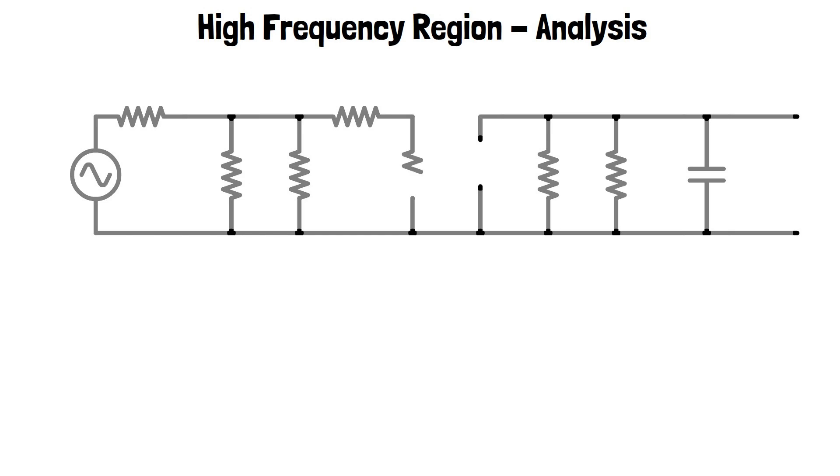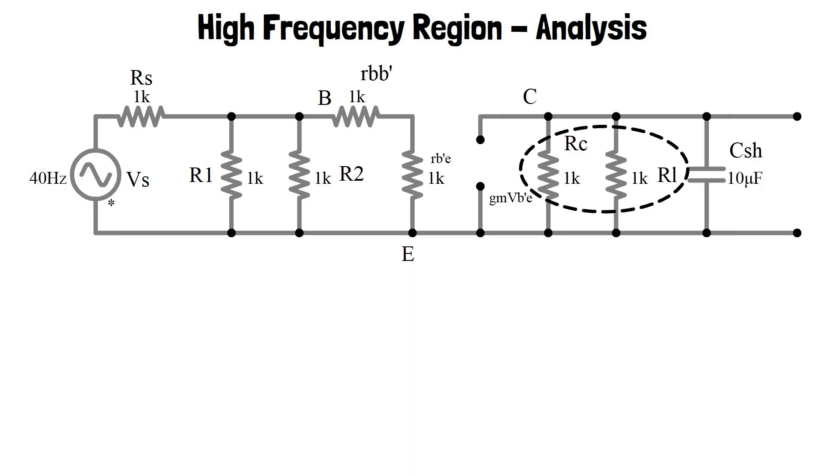Now the final analysis of amplifier in high frequency region. In high frequency region microfarad capacitors are short circuited and picofarad capacitors are considered one at a time. For AC analysis short circuit DC voltage sources and BJT with the approximate hybrid pi model. When CSH is considered, the effect due to CI is neglected. So we get the below circuit.